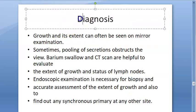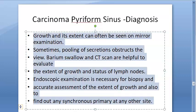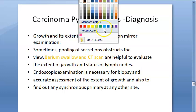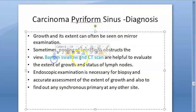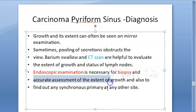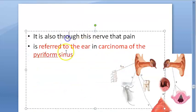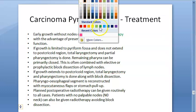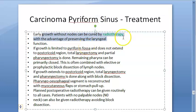Diagnosis involves clinical examination — pooling of secretions may obstruct the view. CT scan is the primary imaging modality; barium swallow is less commonly used nowadays. Endoscopic examination is necessary for biopsy and accurate assessment of the tumor.